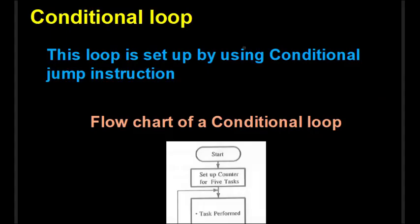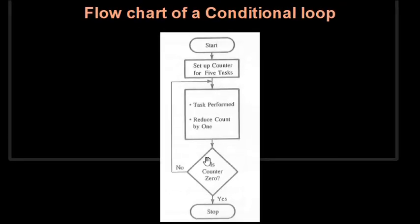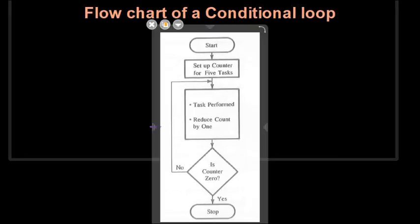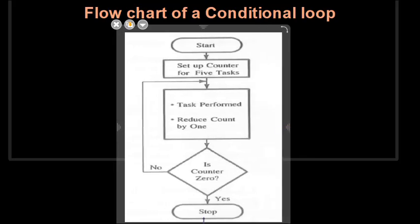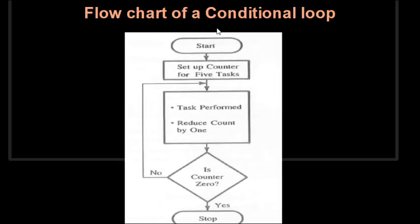The next type is the conditional loop. A conditional loop is set up by using a conditional jump instruction. In the 8085 microprocessor there are eight conditional jumps, and any of them can be used to check a particular condition and generate a conditional loop. The programmer decides which jump to use and where to use it, depending on the program.